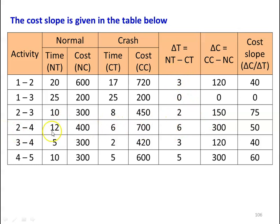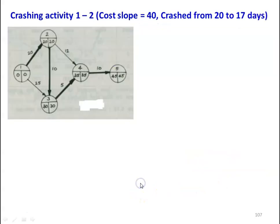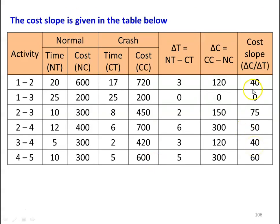For activity 2-4: delta T = 12 minus 6 = 6, delta C = 700 minus 400 = 300, cost slope = 300 divided by 6 = 50. For activity 3-4: delta T = 5 minus 2 = 3, cost slope = 40. For activity 4-5: delta T = 10 minus 5 = 5, delta C = 600 minus 300 = 300, cost slope = 300 divided by 5 = 60. Ranking by lowest cost slope: 1-2 and 3-4 (slope 40), 2-4 (slope 50), 4-5 (slope 60), 2-3 (slope 75). We take them one by one.